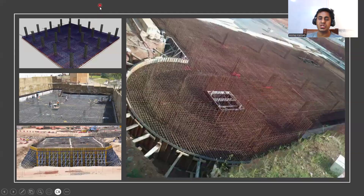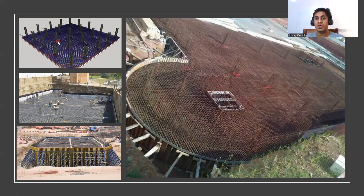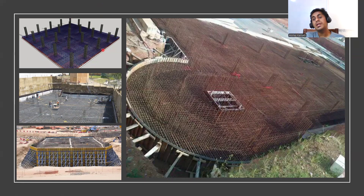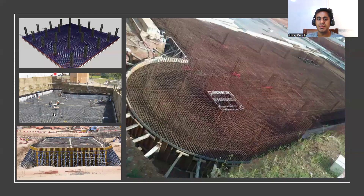These footings are called raft or mat foundation — raft and mat are the same. When you have so many columns and you give isolated footing everywhere, all the footings are going to merge. When all the footings merge, instead of giving isolated footings, for the entire building you give only one footing — that is called a raft or mat foundation. You can see only one foundation has been given for all the columns.